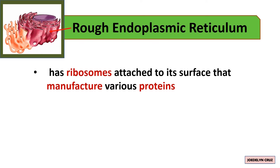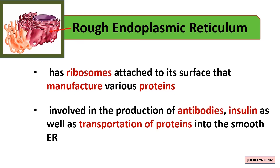Additionally, Rough ER is involved in the production of antibodies and insulin, as well as transportation of proteins into the Smooth Endoplasmic Reticulum.